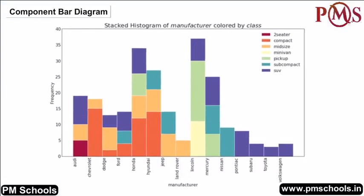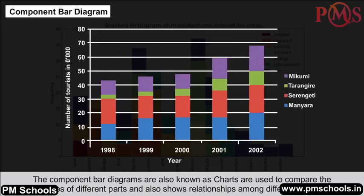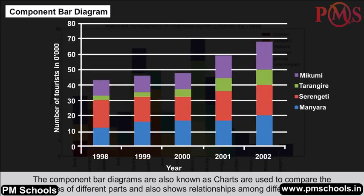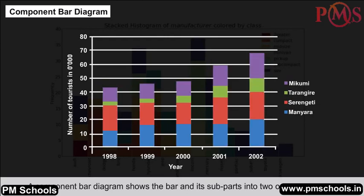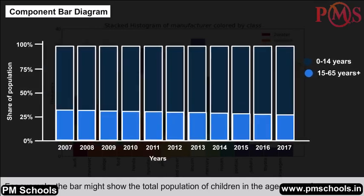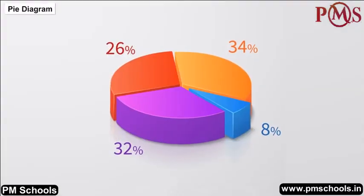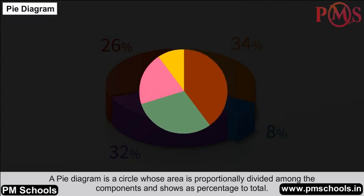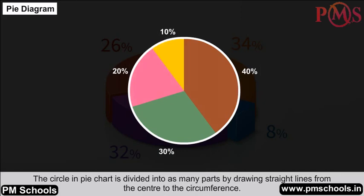Component bar diagram and Pi diagram: Component bar diagrams, also known as charts, compare the sizes of different parts and show relationships among them. A component bar diagram shows a bar divided into two or more sub-parts, for example the total population of children aged 6 to 14 years, and is generally represented in shaded form. A pi diagram is a circle whose area is proportionally divided among components, showing each as a percentage of the total, with the circle divided by straight lines from the centre to the circumference.